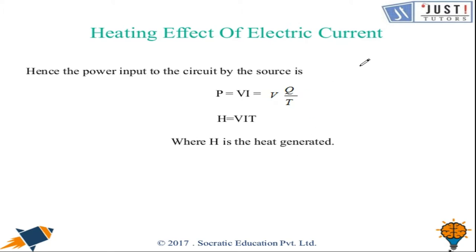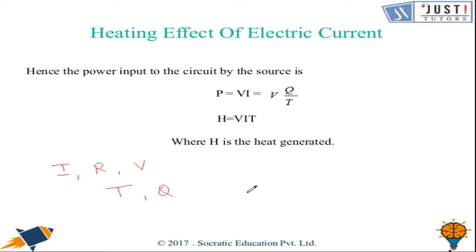Let's suppose current I is flowing through a resistance R. Let the potential difference across them be V. Current flowing is I, resistance is R, potential difference across them is V, and the time during which a charge flows is T. The work done in moving a charge Q coulombs through a potential difference V is VQ, so W = VQ. Hence the source must supply energy equal to VQ in time T, so P = VI = V/V × Q/T. This gives us H = VIT, where H is the heat generated.